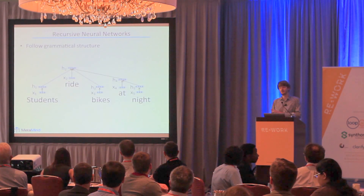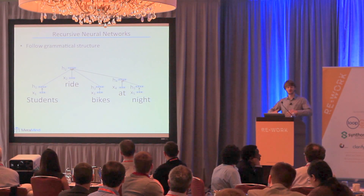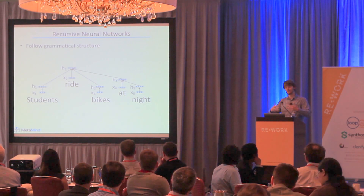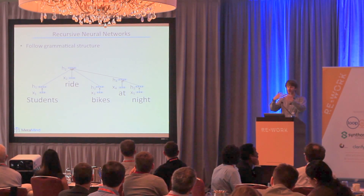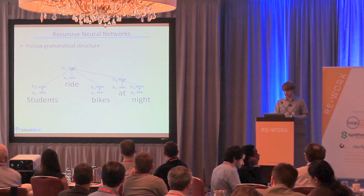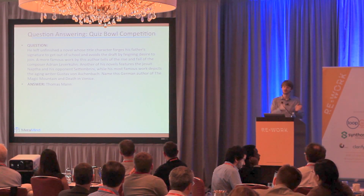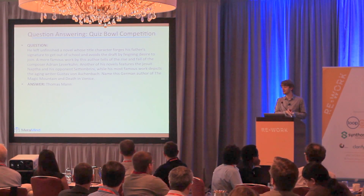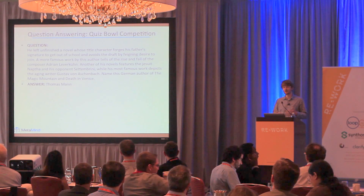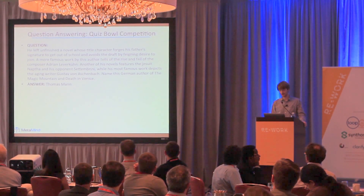It turns out we can use the same exact recursive neural network used for understanding sentiment, but now instead of training the algorithm to predict whether a sentence is positive or negative, we train it to say these facts form something that should map close to the answer. This could be very useful if you have a large knowledge base and a lot of incoming customer email that you want to automatically answer.